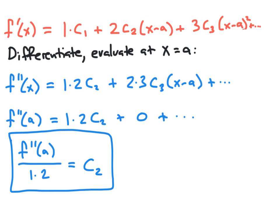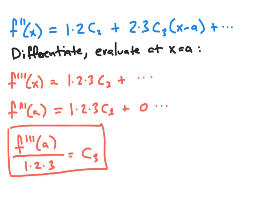We repeat the process one more time to find c₃. Differentiating term by term and evaluating the third derivative at x equal to a, all terms with a factor of x minus a vanish. We're left with f triple prime of a equal to 1 times 2 times 3 times c₃. Dividing by 1 times 2 times 3 gives us c₃ equals f triple prime of a divided by 1 times 2 times 3.